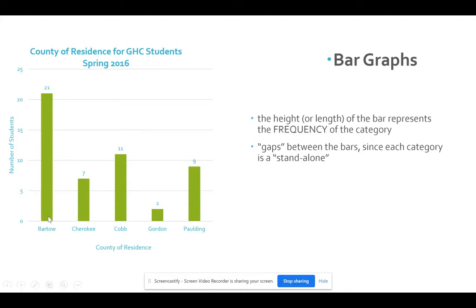Notice there are gaps between the bars because each one of these counties or each one of these categories are individual. They're kind of like a standalone. You don't really have someone that lives in Bartow, Cobb. They either live in Bartow or they live in Cobb. They don't live in both. So the gaps help to indicate that these are separate individual categories.